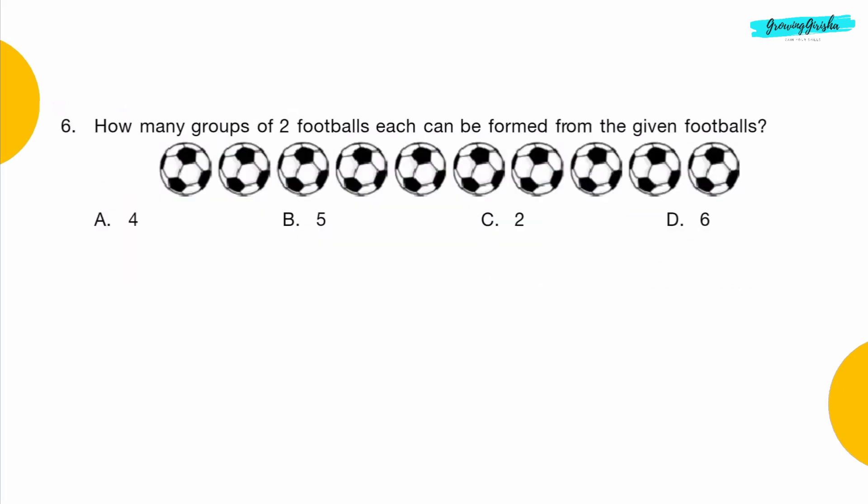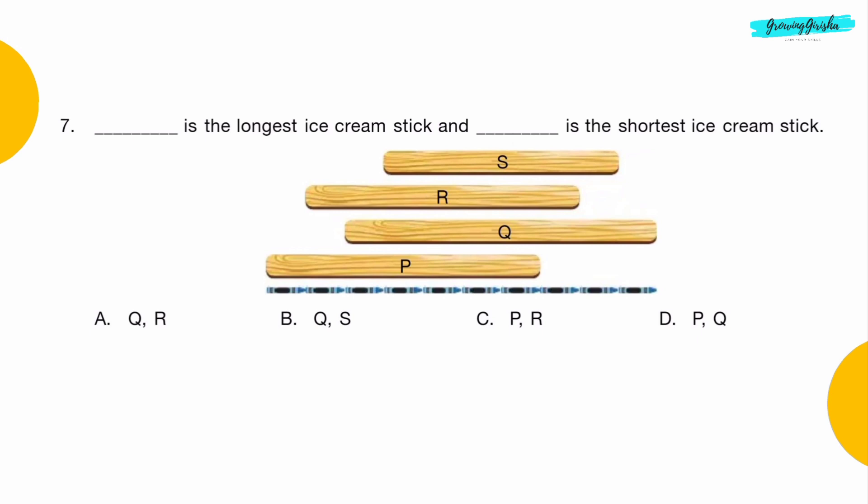Question 6: How many groups of two footballs each can be formed from the given footballs? Option B: 5.